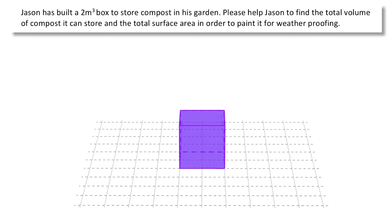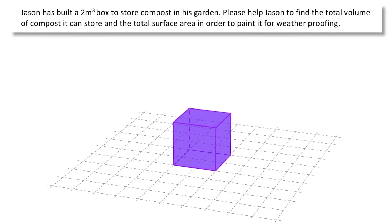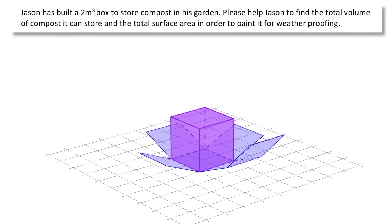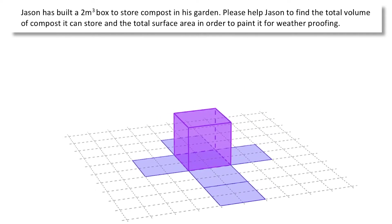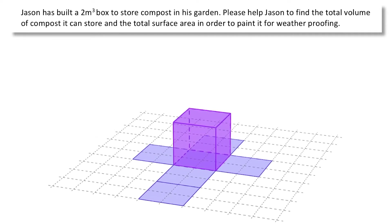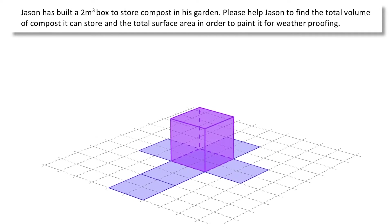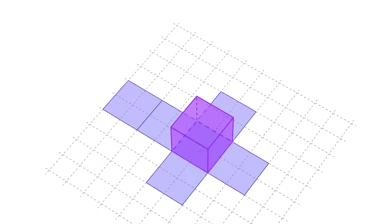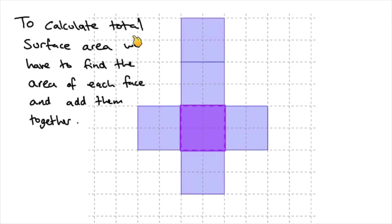In order to calculate the surface area we need to consider the net of this cube. As I open up the net of the cube you can see that there are 6 faces. Since it's a cube, all the edges are the same length, so we have 6 equal faces. To calculate the total surface area we need to find the area of each face and add them together.